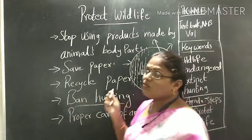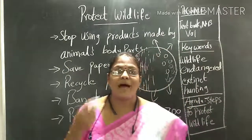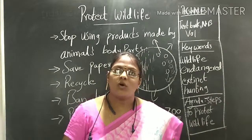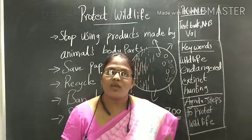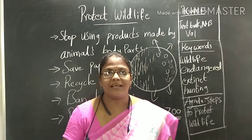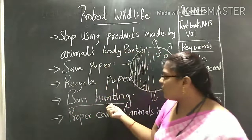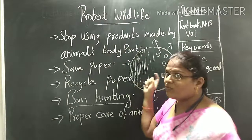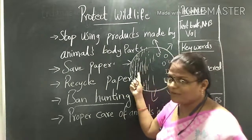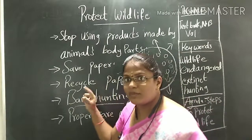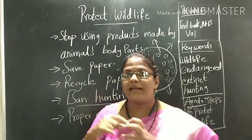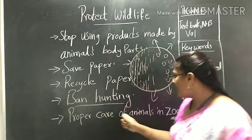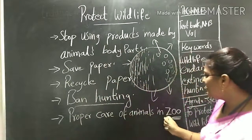We should ban hunting. Ban means stop hunting. If we stop hunting of the animals, animals will be alive. If animals are alive, the plants will also be alive. There is an important interlink between plants and animals.